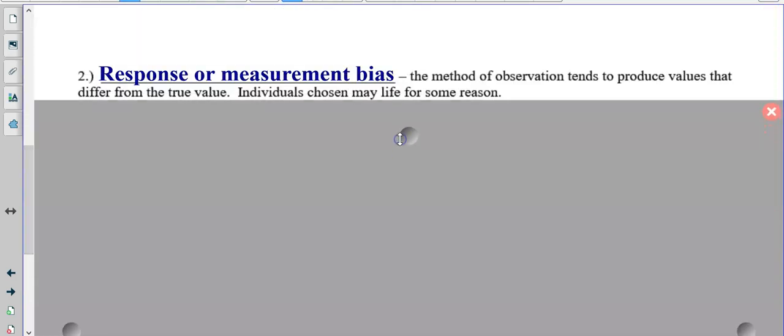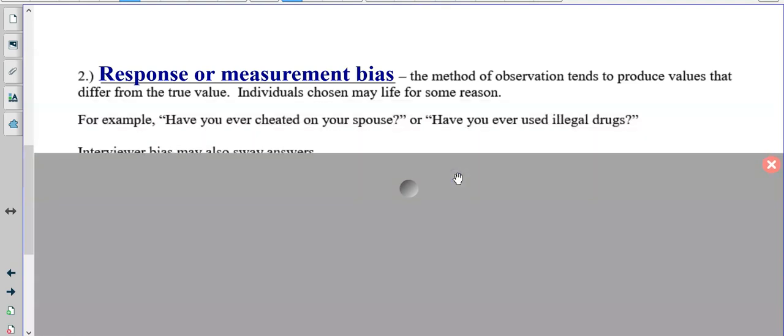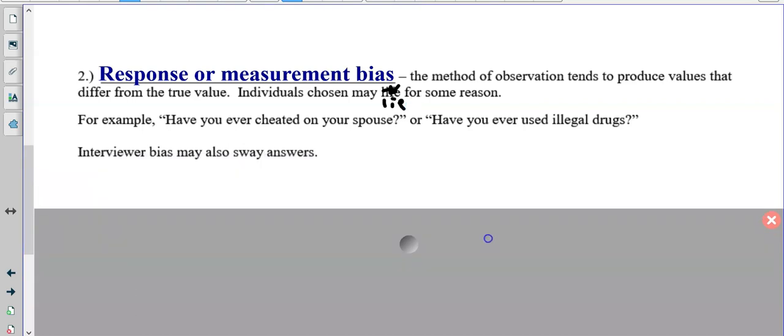The next one is called response or measurement bias. This one tends to produce values that differ from the true value. Individuals chosen may lie for some reason. So for example, have you ever cheated on your significant other? Have you used illegal drugs?